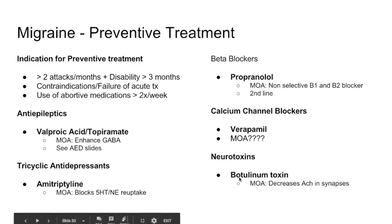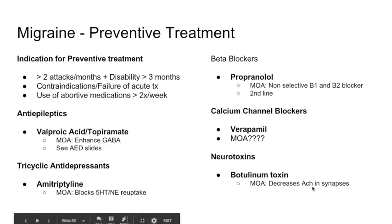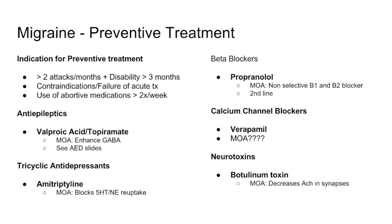Lastly, botulinum toxin — which is Botox — decreases acetylcholine in the synapses. How it relates to migraine is not entirely clear, but it appears to decrease the release of nociceptive substances. Along with reducing acetylcholine, it decreases some of the nociceptive substances that cause the migraine.